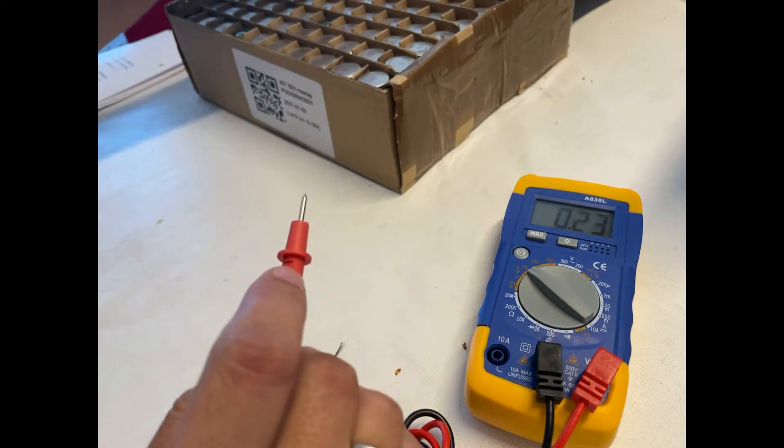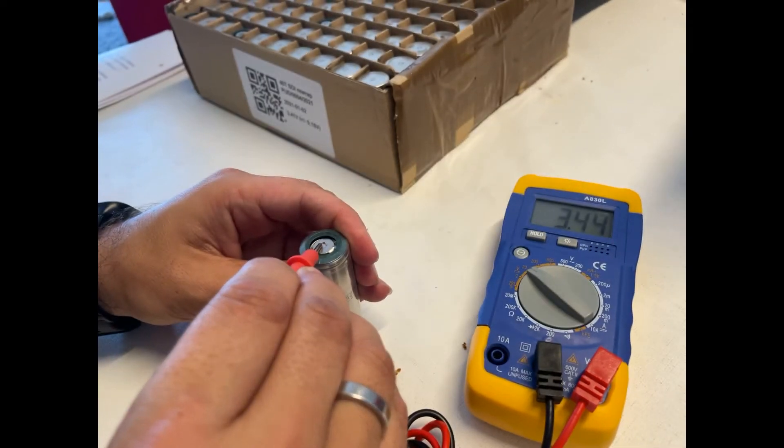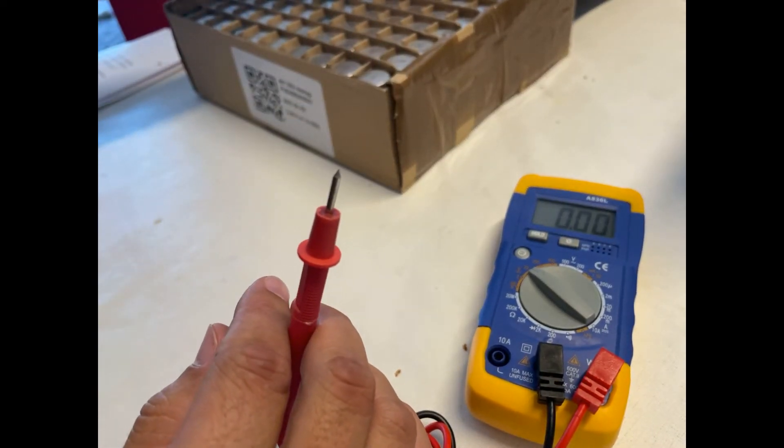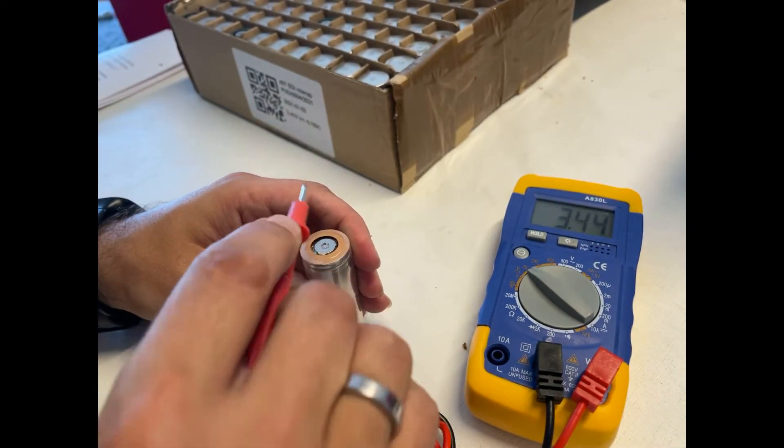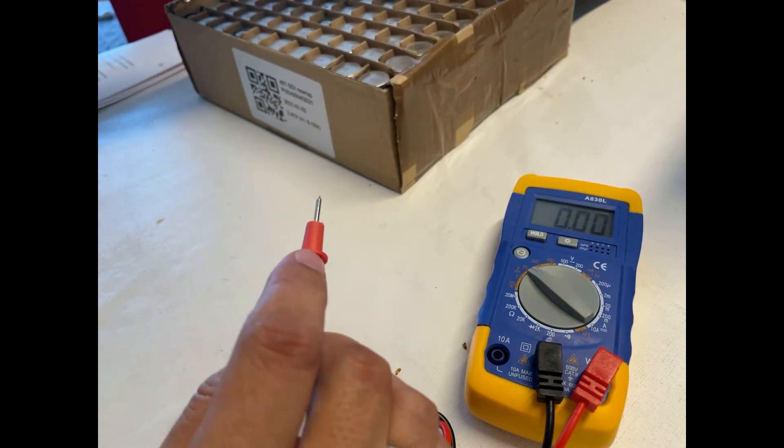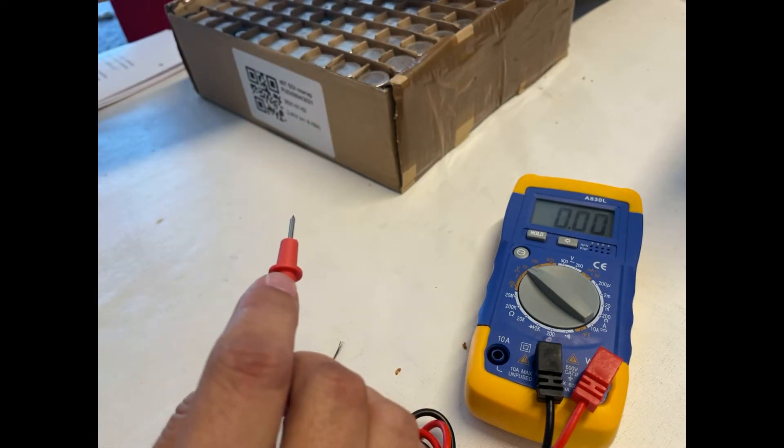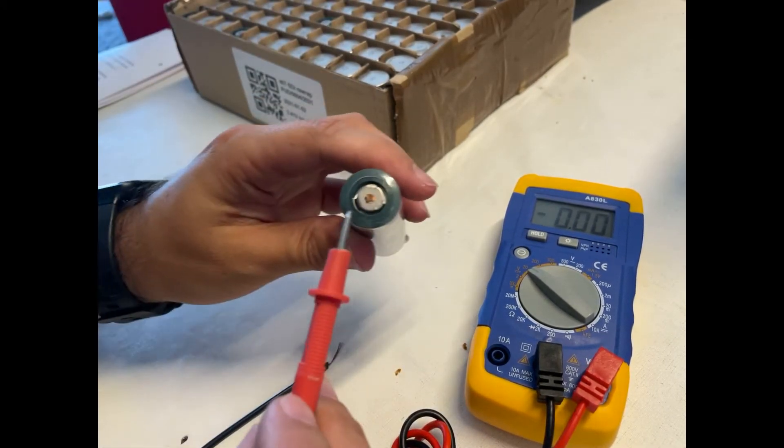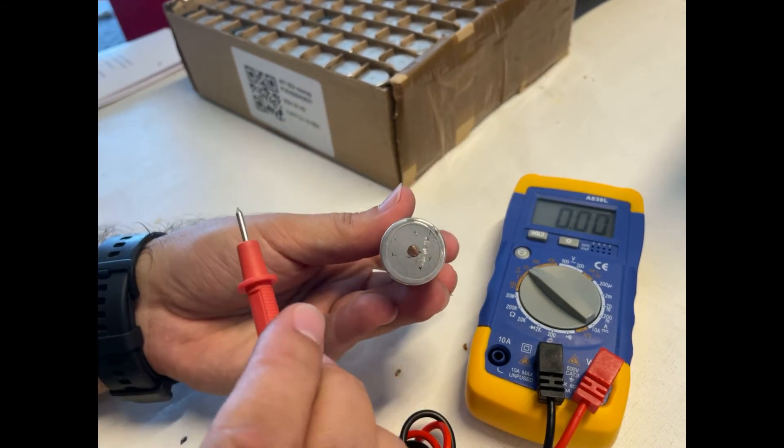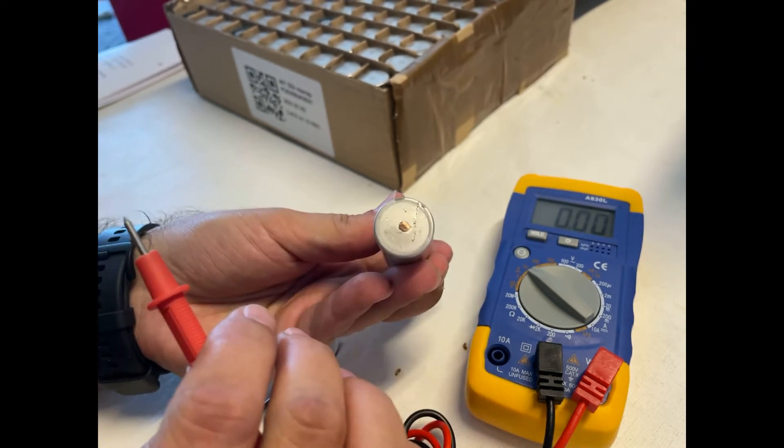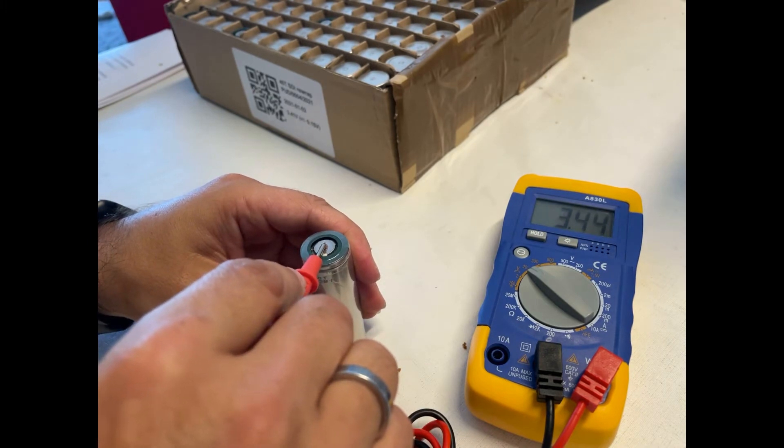3.44. These batteries were bought in NKON. As I said, they are Samsung 40T. They look used. Actually, they were previously welded to a battery pack, but the batteries were never used. They were discarded for some reason, but they have some marks of the previous welds. So NKON doesn't sell it as new.